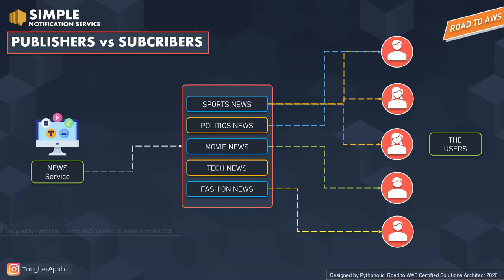Before jumping into SNS, we need to understand the publisher-subscriber model. Consider a news service with multiple topics — sports, politics, movies, tech, and fashion. Each user may be interested in all or a subset of topics. Some users subscribe to sports, some to politics, some to movies or fashion. In this subscription model, the news channel acts as the publisher and the users are the subscribers.